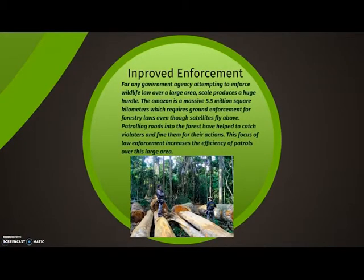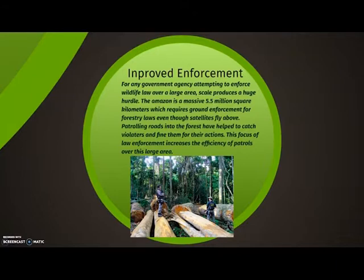Improved enforcement. For any government agency attempting to enforce wildlife law over a large area, scale produces a huge hurdle. The Amazon is a mass of 5.5 million square kilometers, which requires ground enforcement for forestry laws even though satellites fly above. Patrolling roads into the forest has helped catch violators and fine them, increasing the efficiency of patrols over this large area.